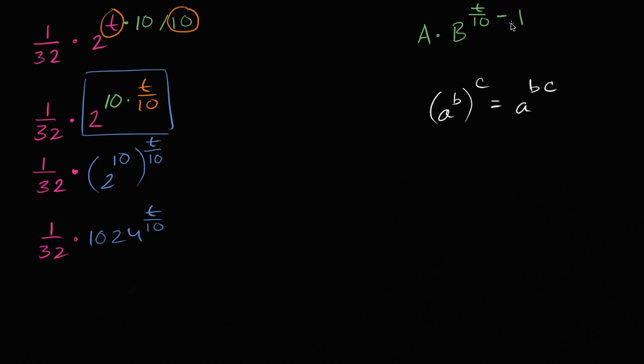So it seems like we're getting close. If there was no minus 1 here, we're essentially done. But now there's this minus 1. So how do we deal with that? Well, we can do a similar type of strategy. We can subtract 1 and then we could add 1. Then we're not actually changing the value. Just as we multiplied by 10 and divided by 10, we're not changing the value up here. If you subtract 1 and add 1 to the exponent, you're not changing its value.